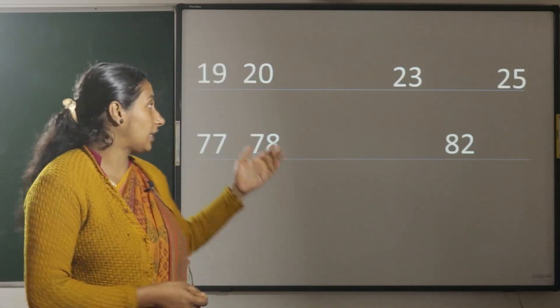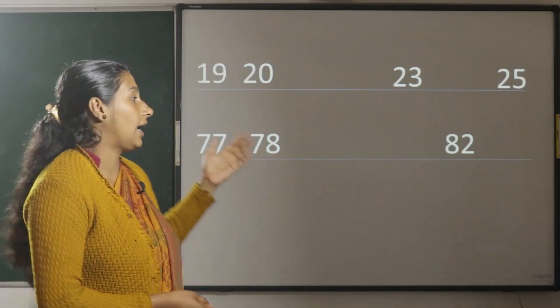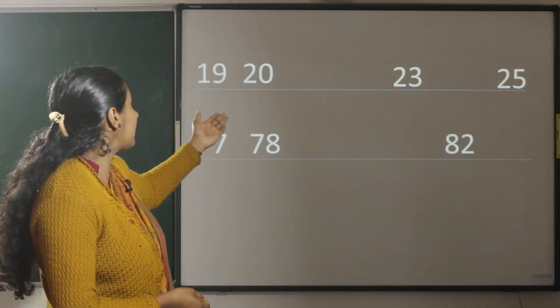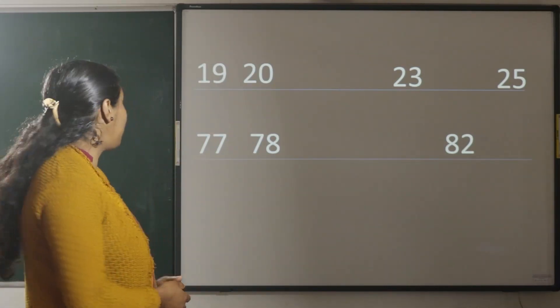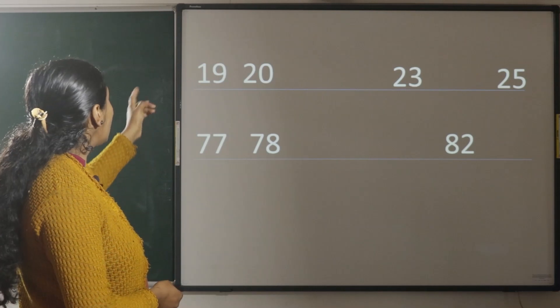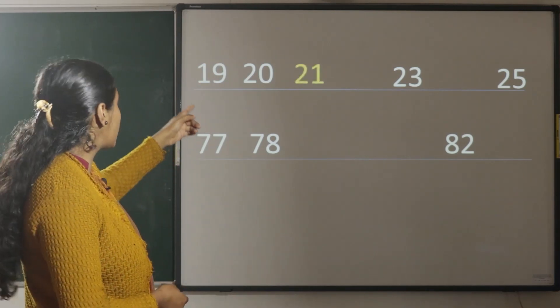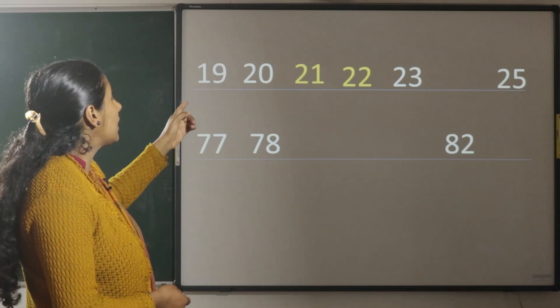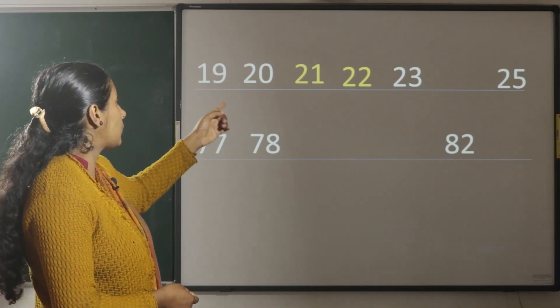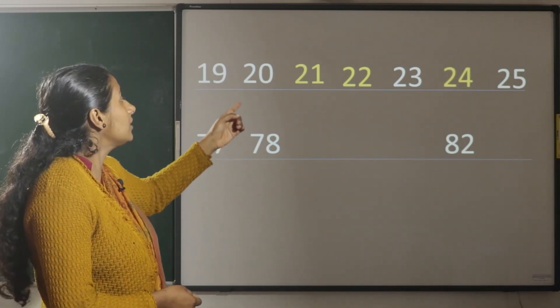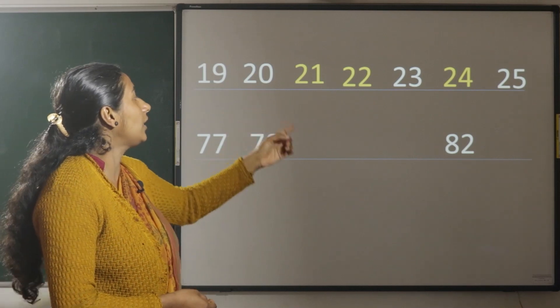Now, we can write the numbers like this. And some numbers are missing here. Shall we fill them? 19, 20. What is the number next? 21. Next, 22. Next, 23 is there. After 24, then 25.